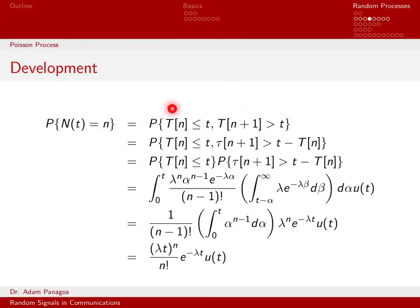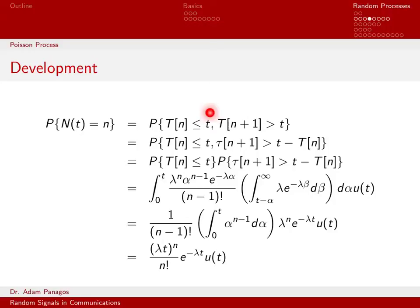The first line is how we equivalently write down that probability. If you think back to the staircase sample function plot, what does it mean for there to have been n arrivals at a given time t? It means the nth arrival time has already occurred — so T_n is less than or equal to t — but the n+1 arrival time hasn't occurred yet, meaning T_{n+1} is greater than t. This places us in a flat portion of the staircase at value n.